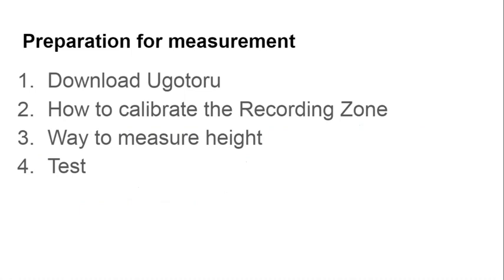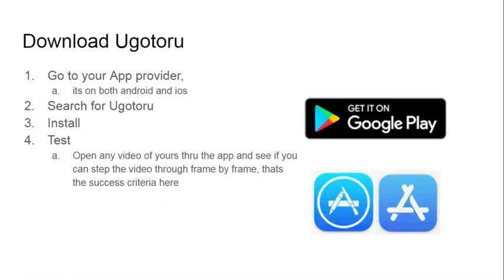The steps we need to follow: download ugotoro, calibrate the recording zone, find the height, and do a test. To download ugotoro, go to your Play Store or App Store, install it and test it. When I say test it — go back to any video you've made and just see if you can step through it one frame at a time.